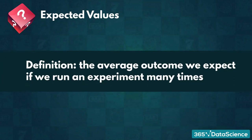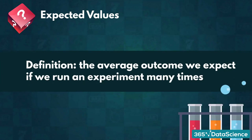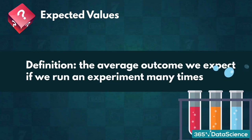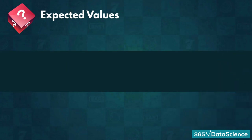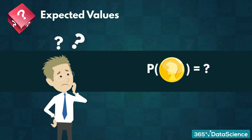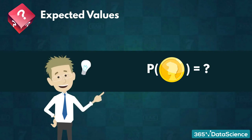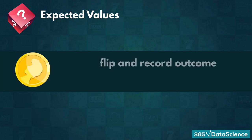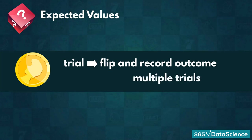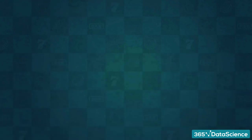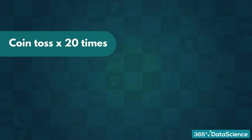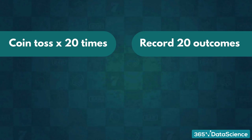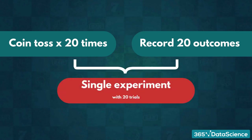Expected values represent what we expect the outcome to be if we run an experiment many times. To fully grasp the concept, we must first explain what an experiment is. Imagine we don't know the probability of getting heads when flipping a coin. We are going to try to estimate it ourselves. So, we toss a coin several times. After doing one flip and recording the outcome, we complete a trial. By completing multiple trials, we are conducting an experiment. For example, if we toss a coin 20 times and record the 20 outcomes, that entire process is a single experiment with 20 trials.